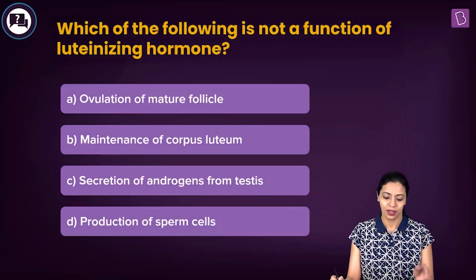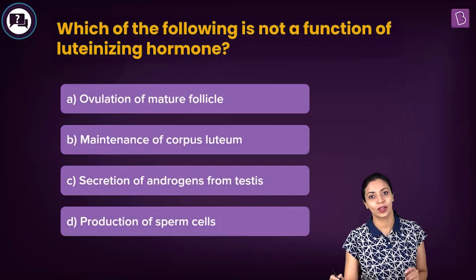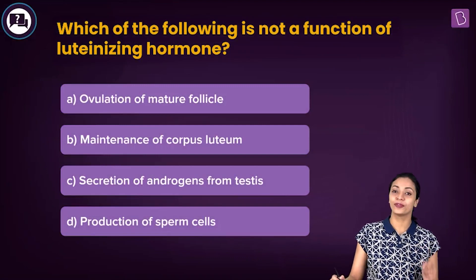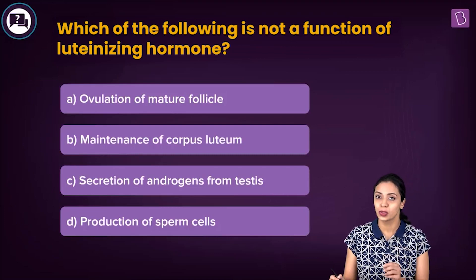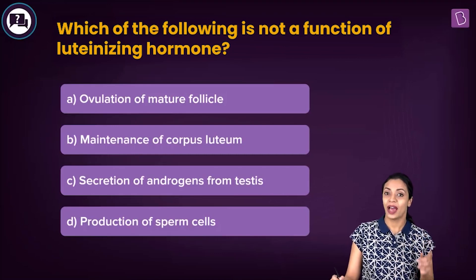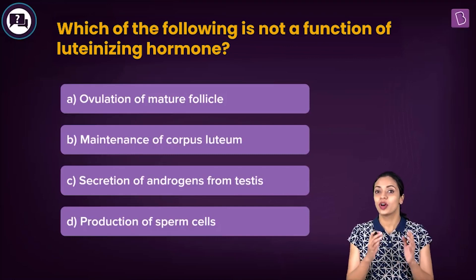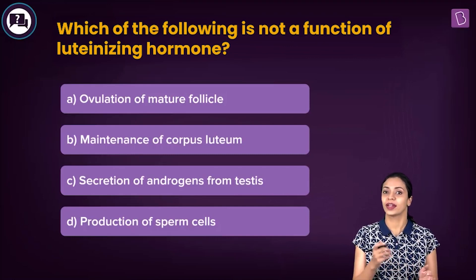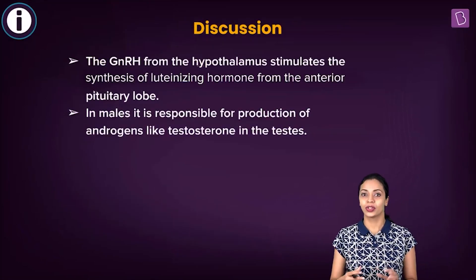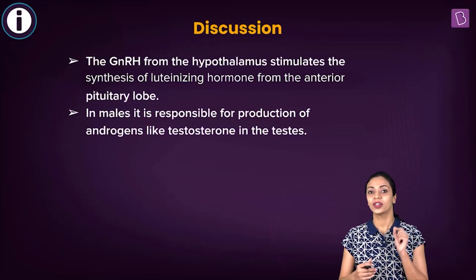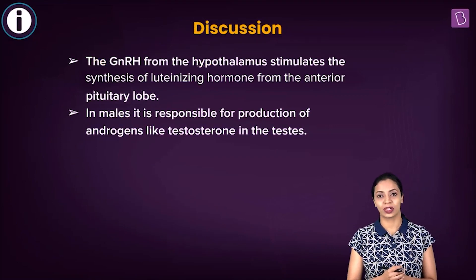Here's the next question: Which of the following is not a function of the luteinizing hormone? The options are: ovulation of a mature follicle; maintenance of corpus luteum; secretion of androgens from the testis; production of sperm cells. We need to find which is NOT a function of LH. Luteinizing hormone (LH) is one of the gonadotropins produced by the anterior lobe of the pituitary.